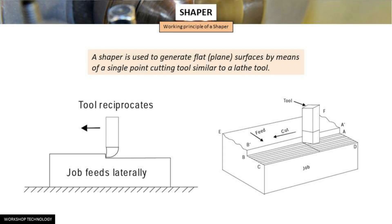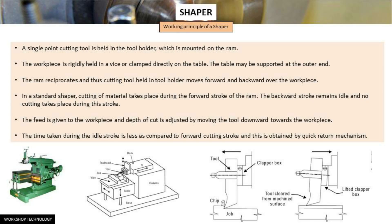The feed is given to the workpiece and depth of cut is adjusted by moving the tool downward towards the workpiece. The time taken during the idle stroke is less as compared to the forward cutting stroke, and this is obtained by the quick return mechanism.